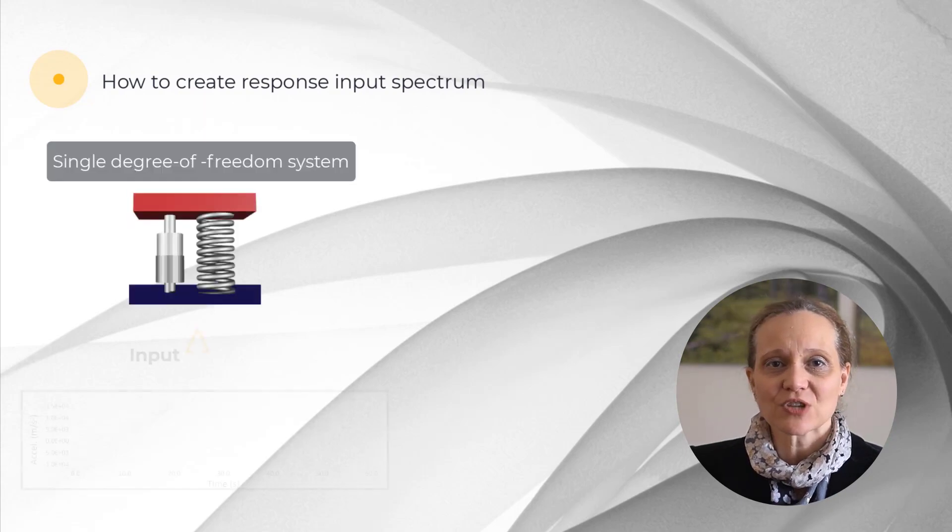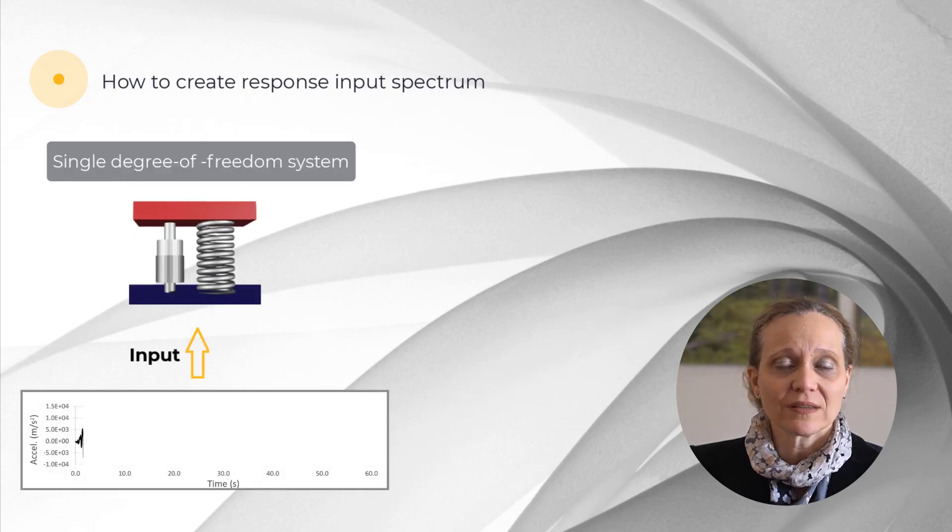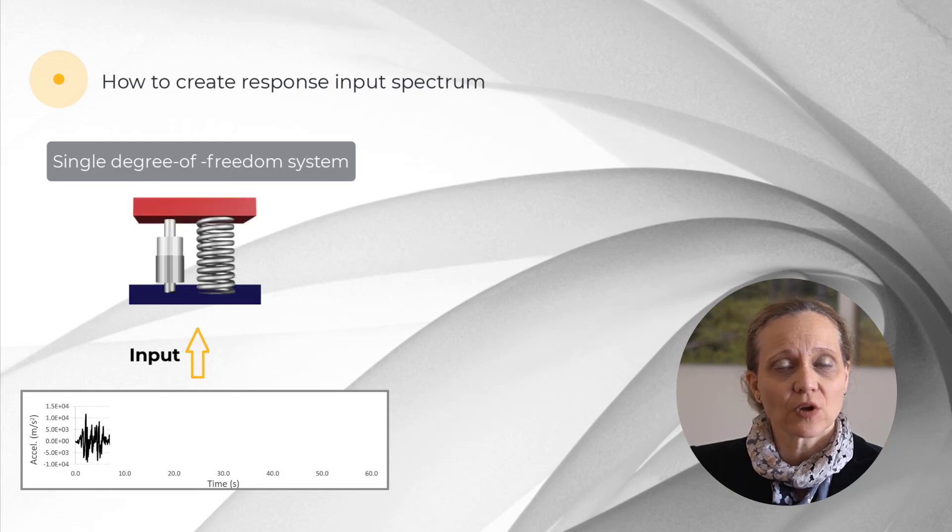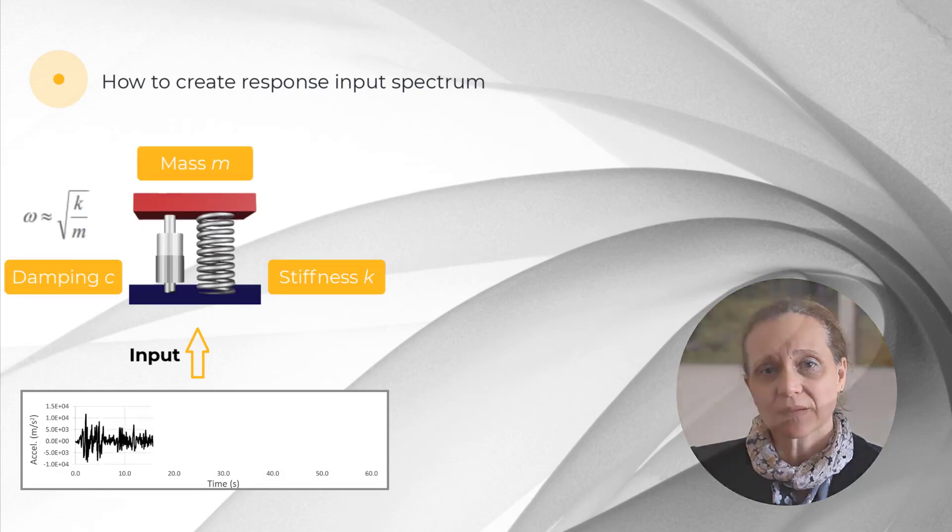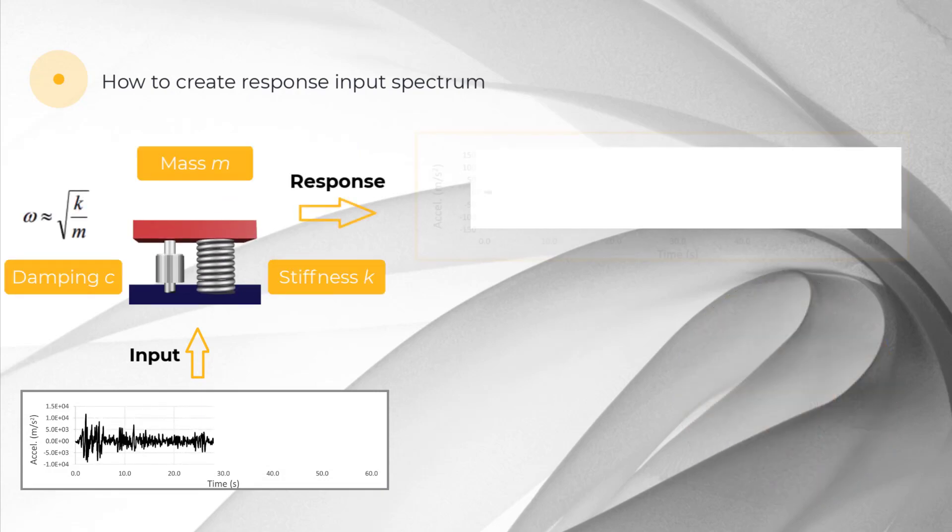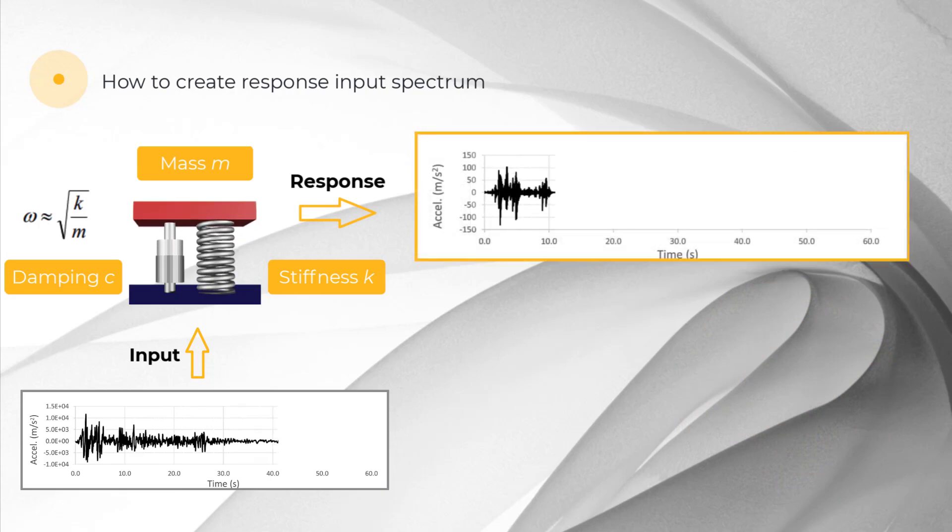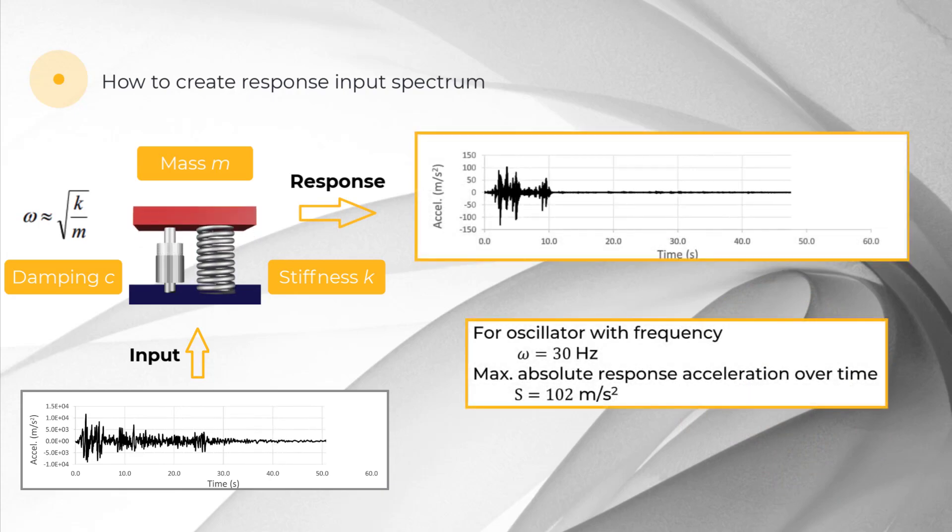Assume a small model subjected to transient loading, a 1 degree of freedom oscillator with known mass, stiffness and damping. Track the response such as displacement, velocity or acceleration over time. Notice that maximum absolute amplitude over time is captured.